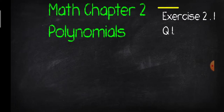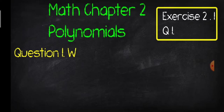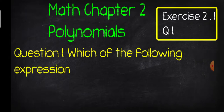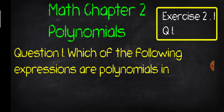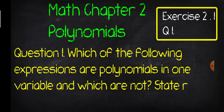We will do question number 1 of Exercise 2.1. Question number 1 is very easy and very interesting. I will explain it with an easy trick. First of all, let's read the question well. Question 1 is: which of the following expressions are polynomials in one variable and which are not? State reasons for your answer. We have to give reasons why they are or are not polynomials in one variable.